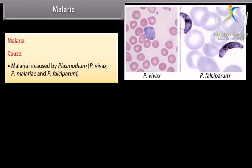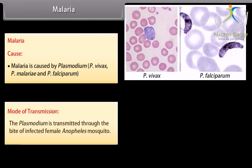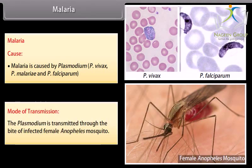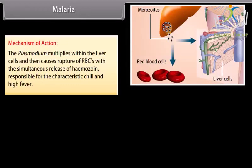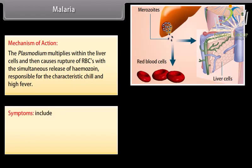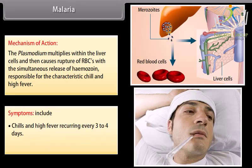Malaria. Malaria is caused by Plasmodium P. vivax, P. malariae, and P. falciparum. Mode of transmission: the plasmodium is transmitted through the bite of infected female Anopheles mosquito. Mechanism of action: the plasmodium multiplies within the liver cells and then causes rupture of RBCs with the simultaneous release of haemozoin responsible for the characteristic chill and high fever. Symptoms include chills and high fever recurring every 3 to 4 days and fatigue.